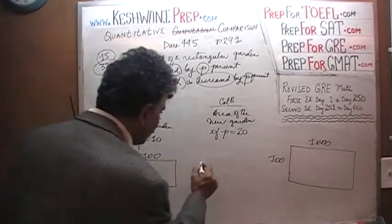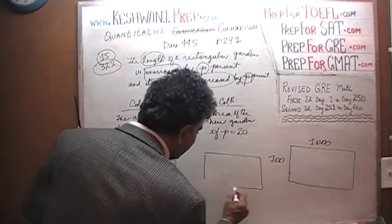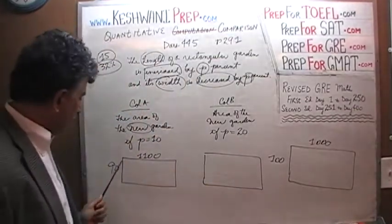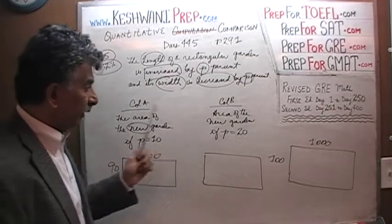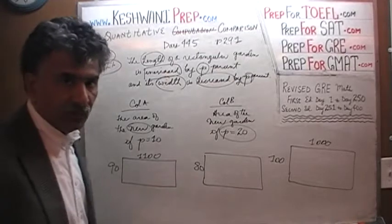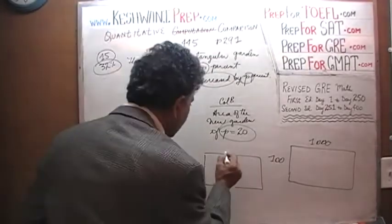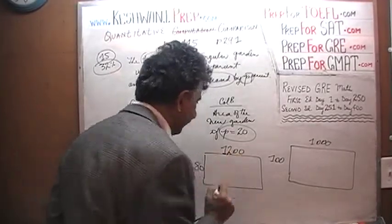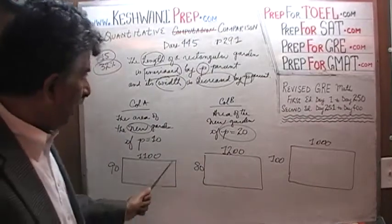Now let's do the same thing. Same thing here. We are going to decrease the width now. We are going to decrease the width by 20%. So it becomes 80. And we are going to increase the length by 20%. 20% of 1000 is 200. So it becomes 1200. We are going to continue our work on the top here.